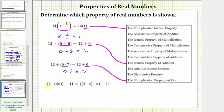For the last example, we have the quantity two times four x minus 11 equals the quantity two times four times x minus 11. Notice on the left side of the equation, we have two times four x. On the right, we have the quantity two times four times x. Also remember that four x means four times x. We need to focus on the property shown by two times four x, writing four x as four times x, so we have two times the quantity four times x equals, on the right, the quantity two times four times x.